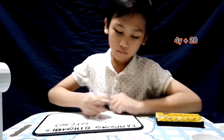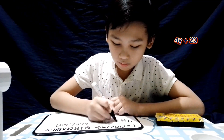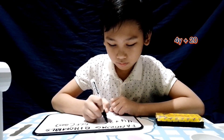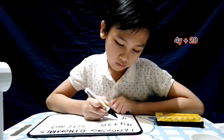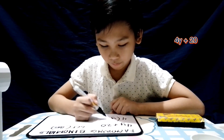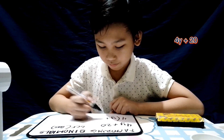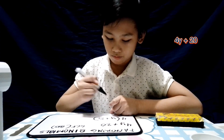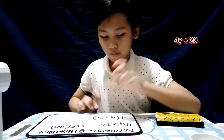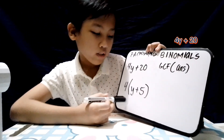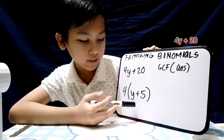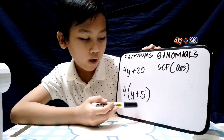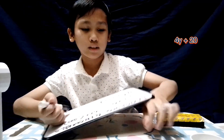Next: 4y plus 20. The answer is 4 times open parenthesis y plus 5, close parenthesis. Very good.